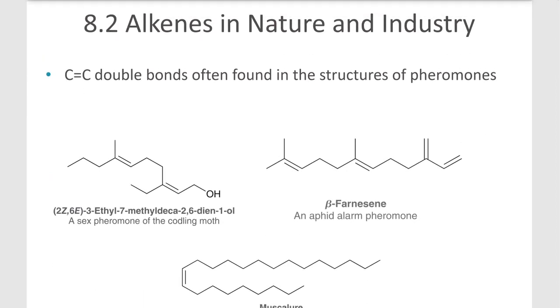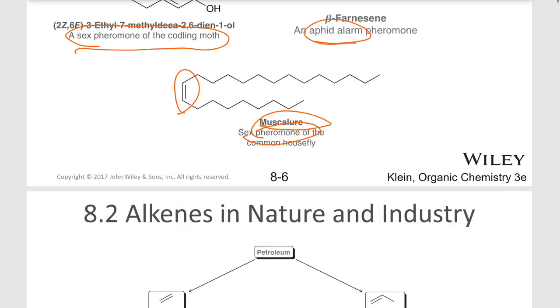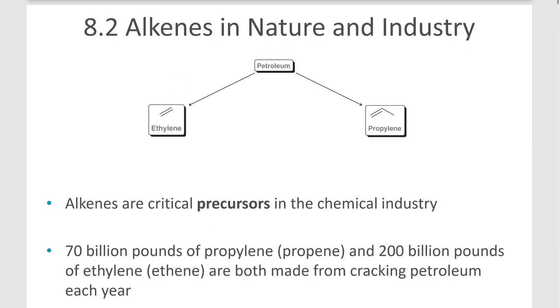Here's an example on the left here, the sex pheromone of the codling moth. And then we have an aphid alarm pheromone here. These have double bonds in them. And then at the bottom, a sex pheromone for a housefly. So all of these have double bonds in them.